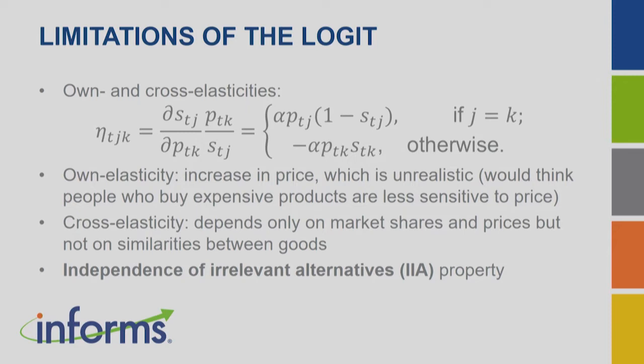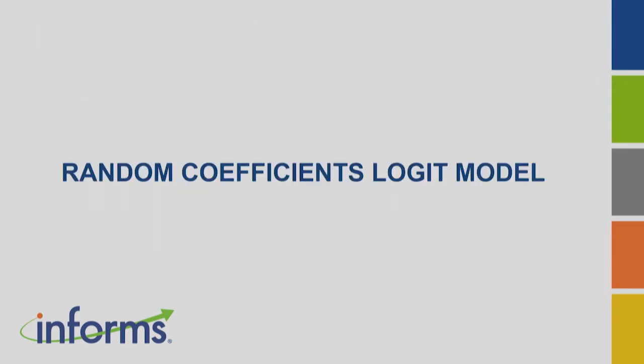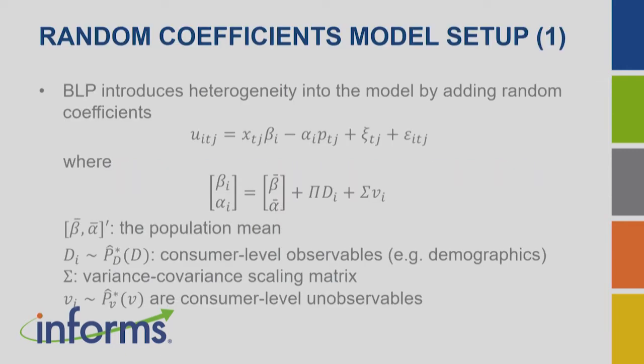Because of the IIA problem, we often see very weird substitution patterns. To address these limitations of the logit model, we add more flexibility by introducing what we call the random coefficients logit model. Barry, Levinson, and Peix introduced heterogeneity into the homogeneous logit model by adding random coefficients — hence the name the BLP model.